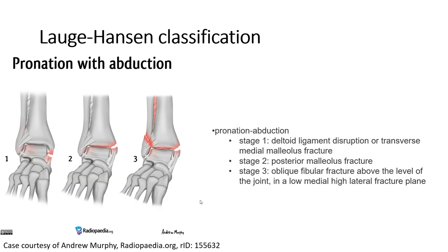Pronation with adduction is divided into three stages. Stage 1: deltoid ligament disruption or transverse medial malleolus fracture. Stage 2: posterior malleolus fracture. Stage 3: oblique fibular fracture above the level of the joint, in a low-medial high-lateral fracture pattern.